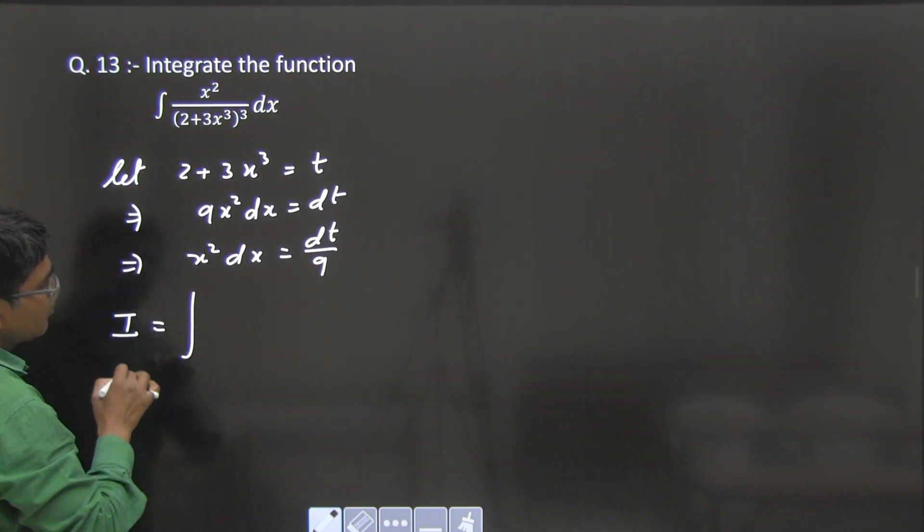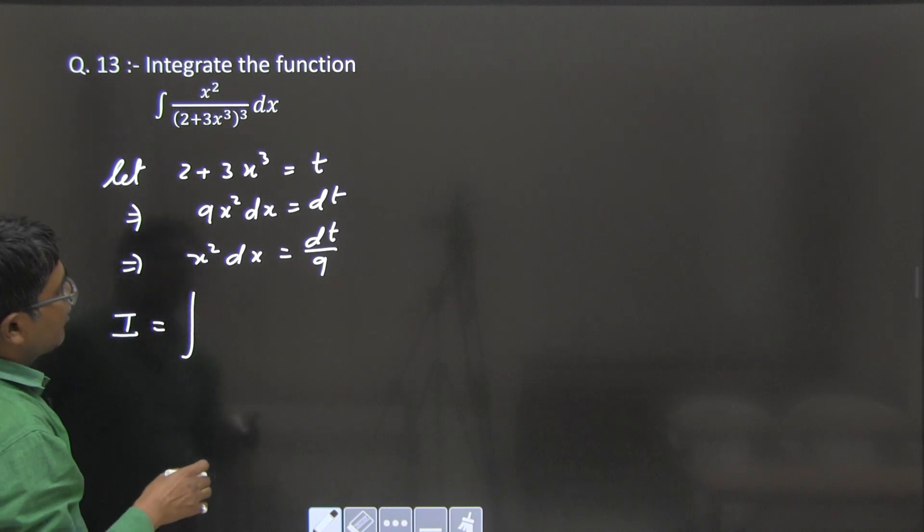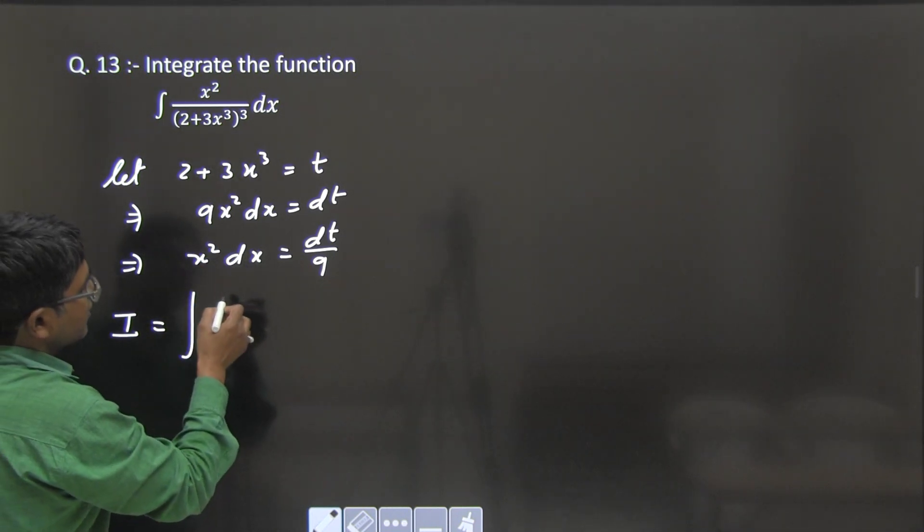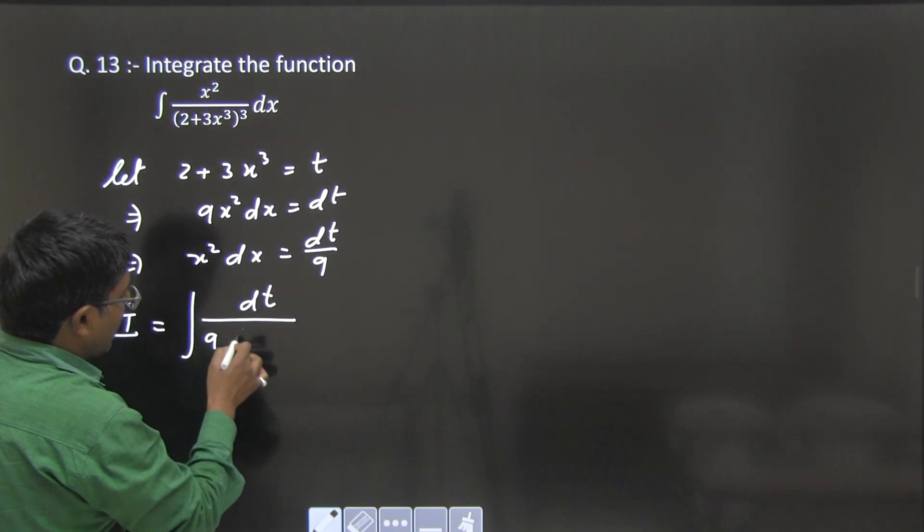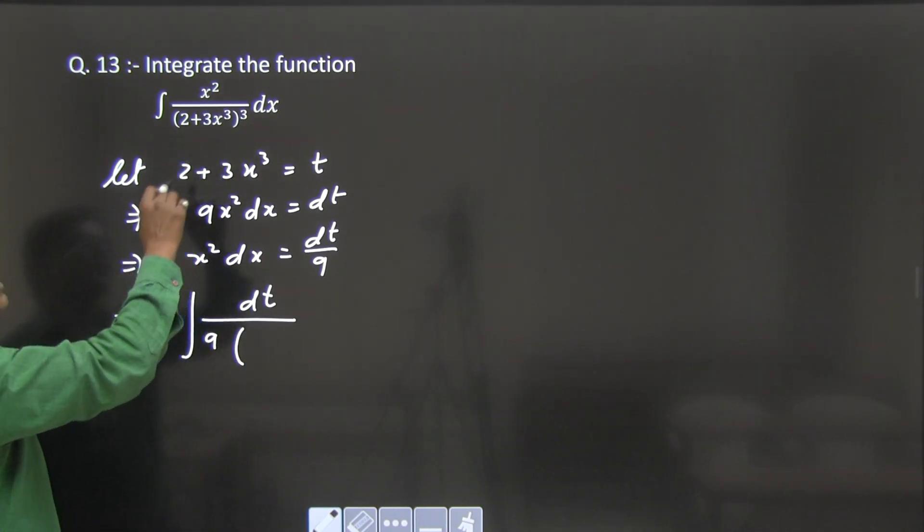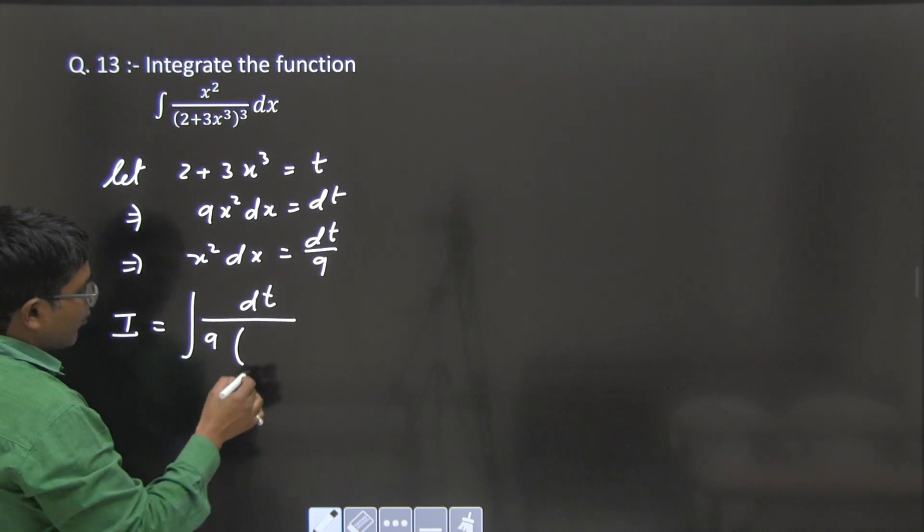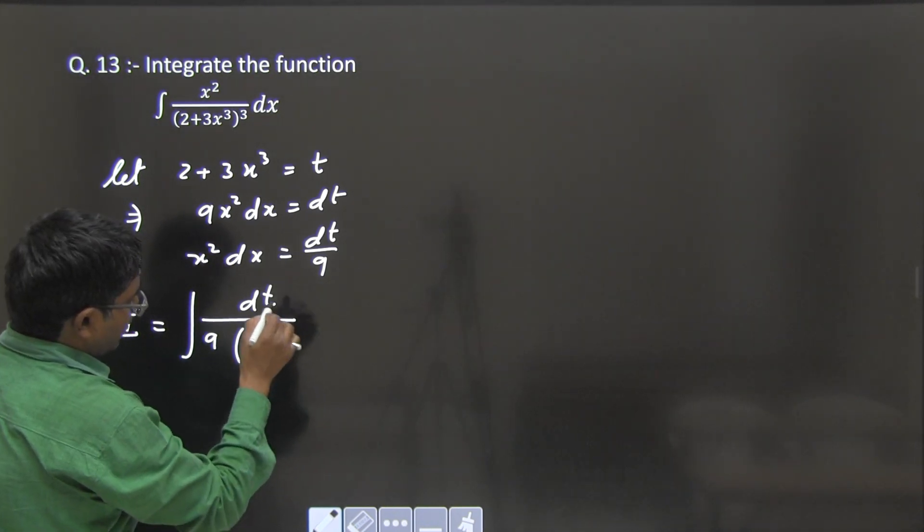Now replace the value. In place of x²dx we can put dt/9, and in place of 2 + 3x³ we put t to the whole cube.